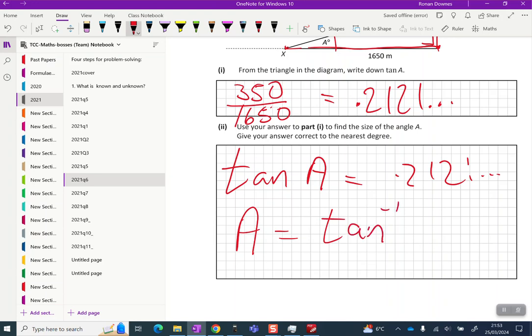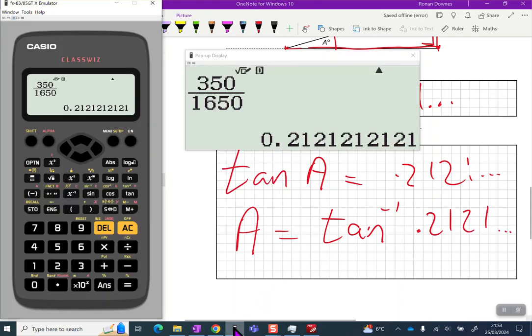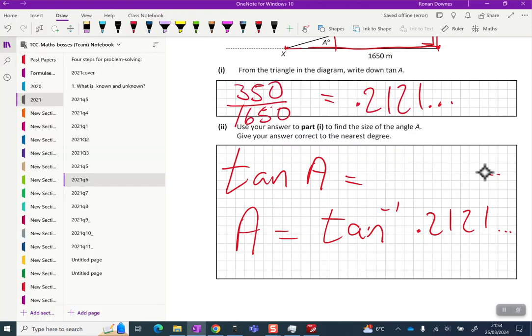On our calculators, put in 0.2121 etc. Or we could say 7 over 33, which is a much nicer way of putting it. Remember I'm forcing my calculator to go straight to decimal, but I didn't have to do that, and in this case 7 over 33 is a better answer.